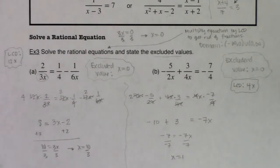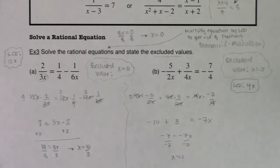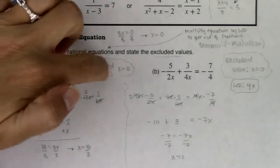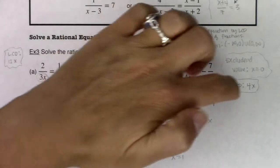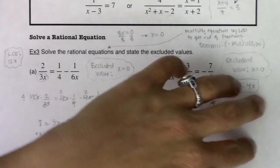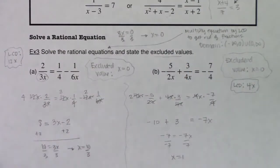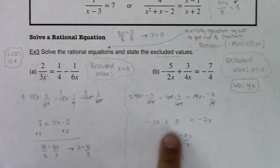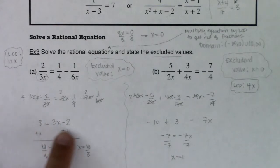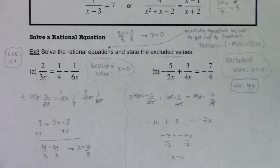On the next page, we're going to try a couple more rational equations — they'll be a little more complicated, but the same idea. I'll figure out what my excluded values are, get the LCD, multiply it through every term, knock out the fractions, and wind up with a much nicer-looking equation to solve.